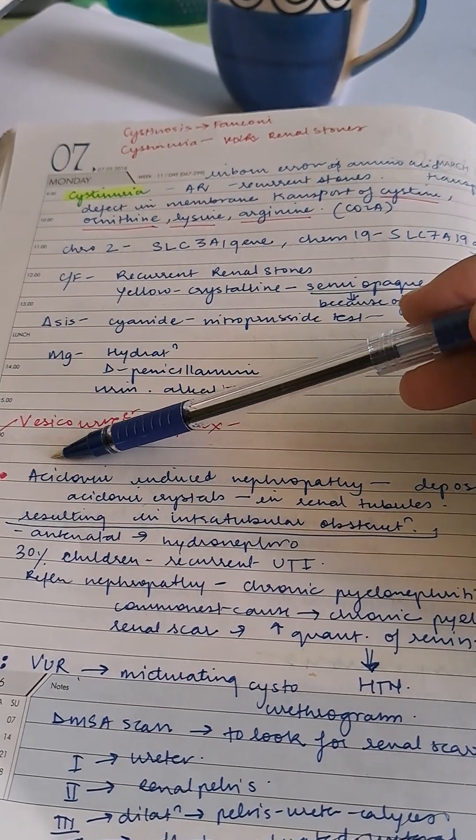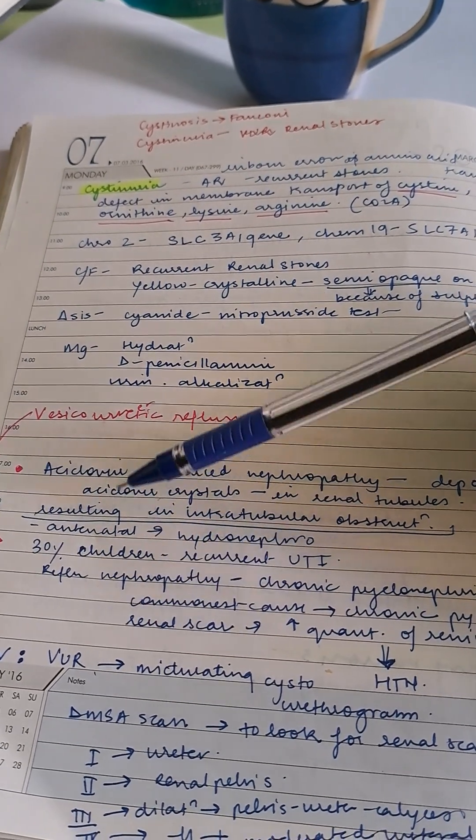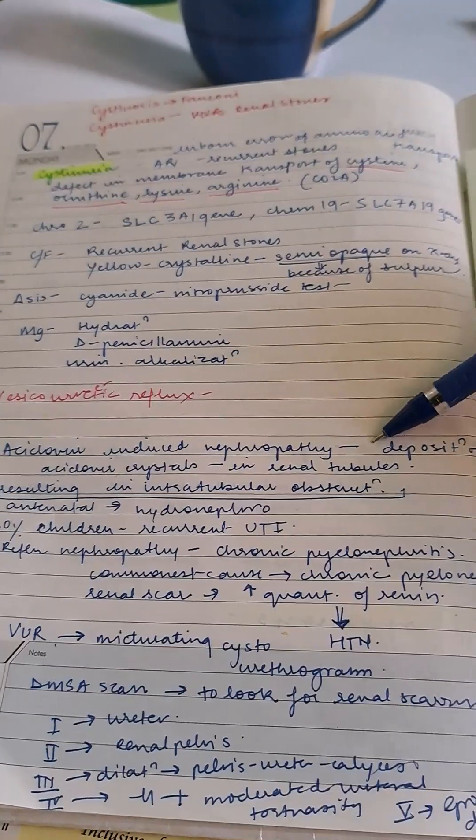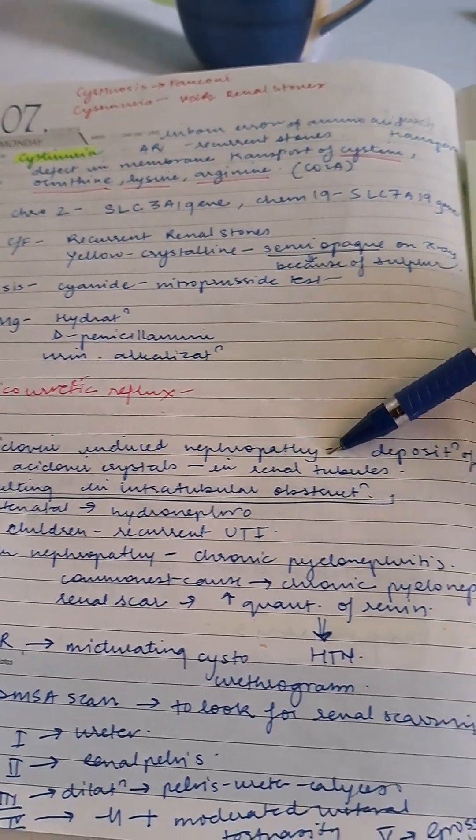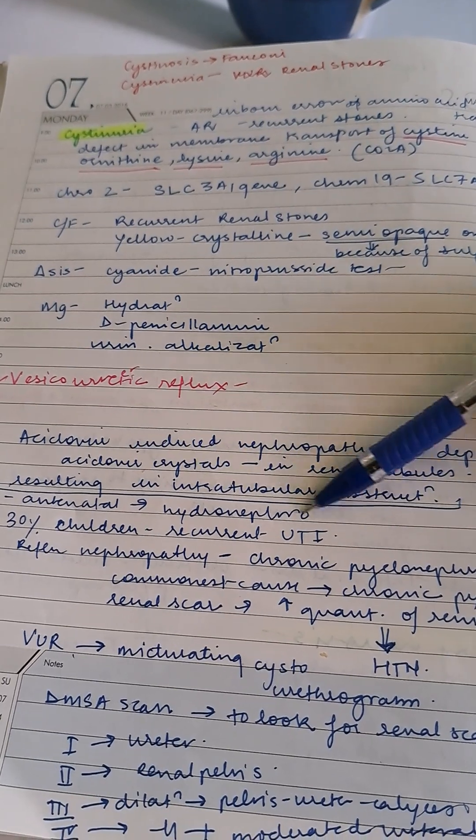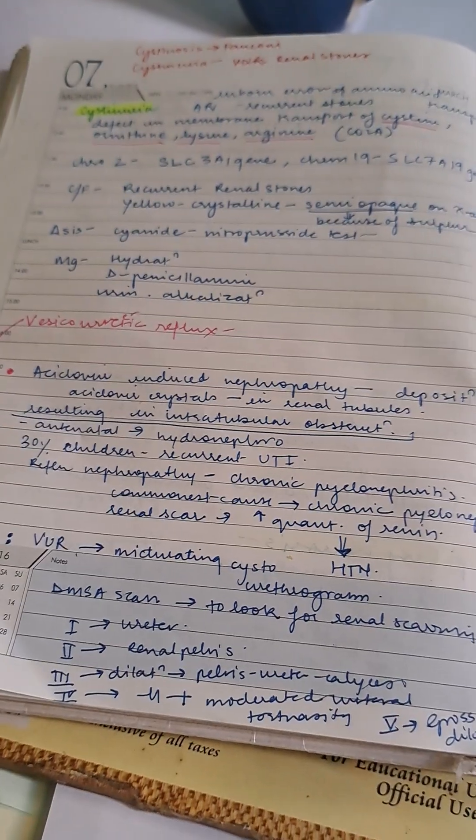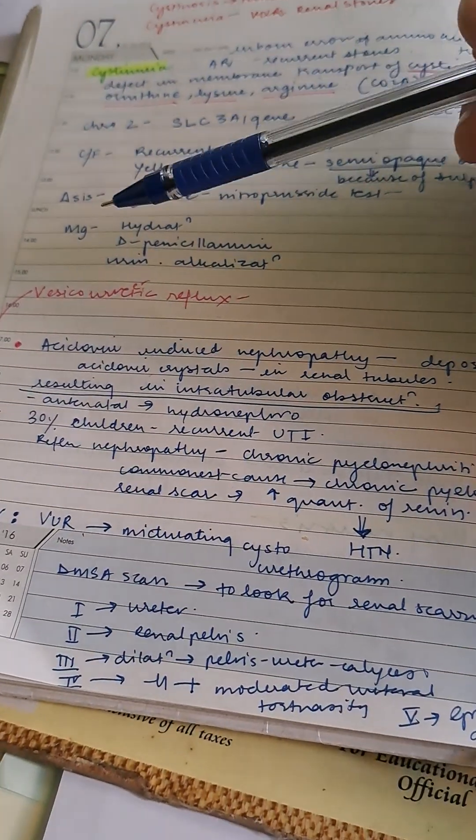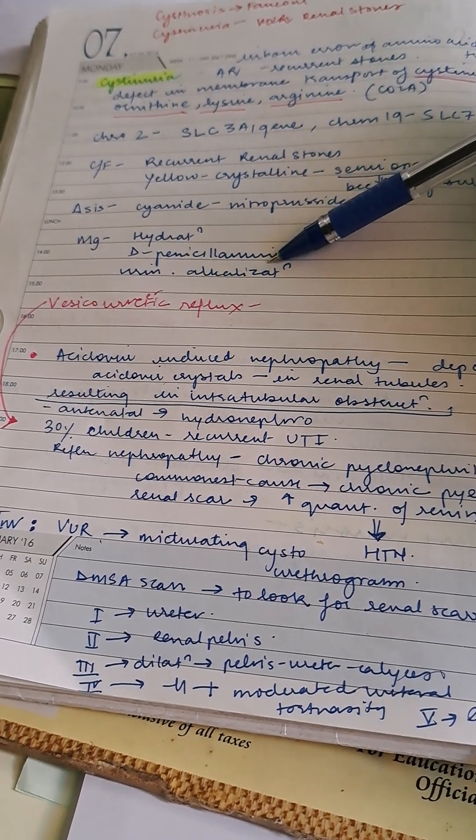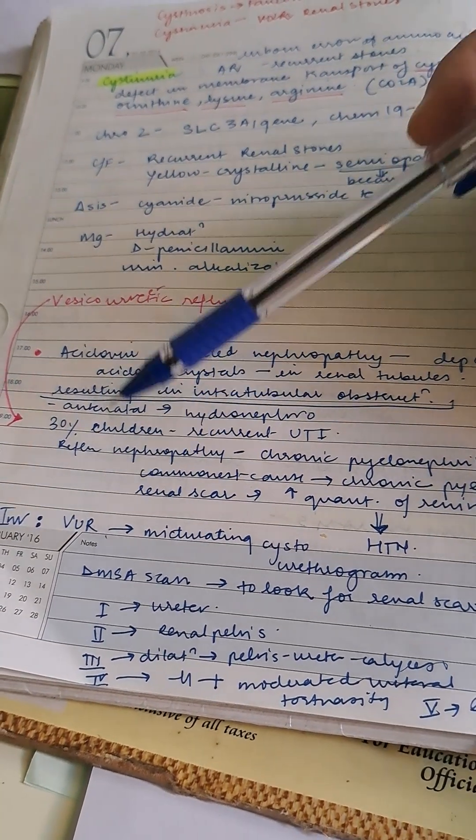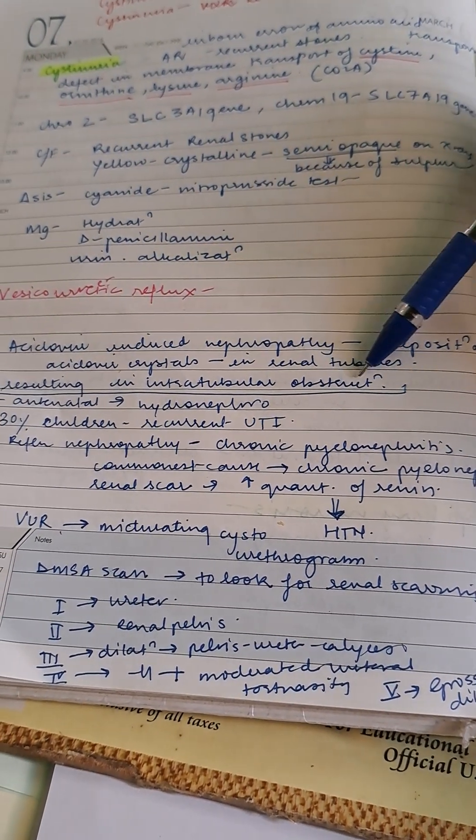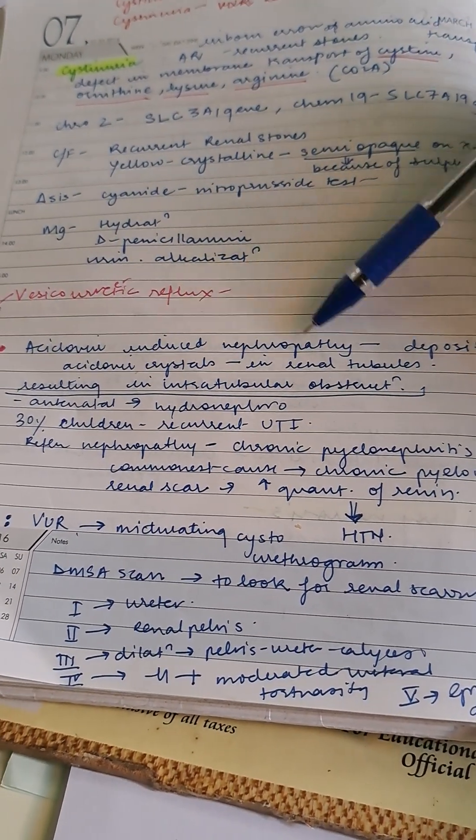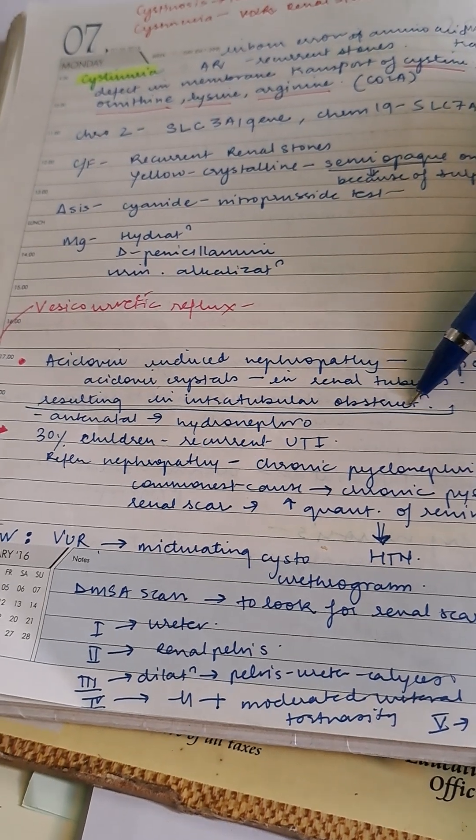Acyclovir-induced nephropathy involves deposition of acyclovir crystals on renal tubules resulting in intratubular obstruction. Treatment includes hydration and D-penicillamine.